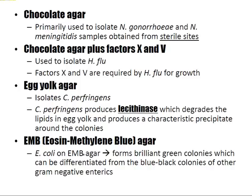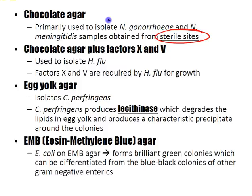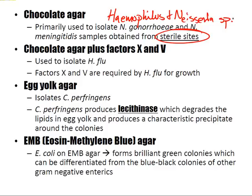Chocolate agar is made by cooking blood agar to inactivate growth inhibitors of Neisseria and Haemophilus. It is primarily used to isolate Neisseria gonorrhoeae and Neisseria meningitidis from sterile sites. Chocolate agar plus factors X and V is used to isolate H. influenzae, as factors X and V are required for its growth.